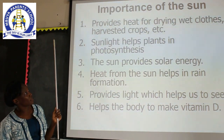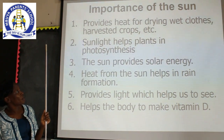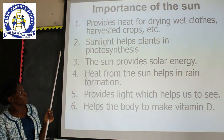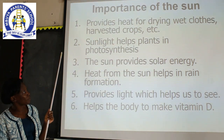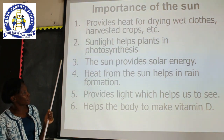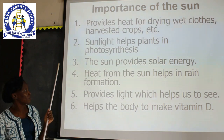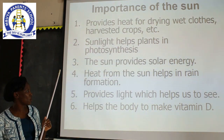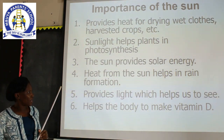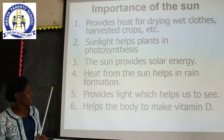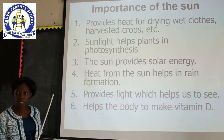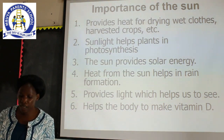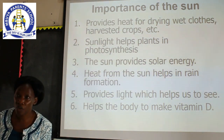One, the sun provides heat for drying wet clothes and harvested crops. Two, sunlight helps plants in photosynthesis. Three, the sun provides solar energy. Four, heat from the sun helps in rain formation. Five, it provides light which helps us to see and helps the body to make vitamin D. Those are the importance of the sun.